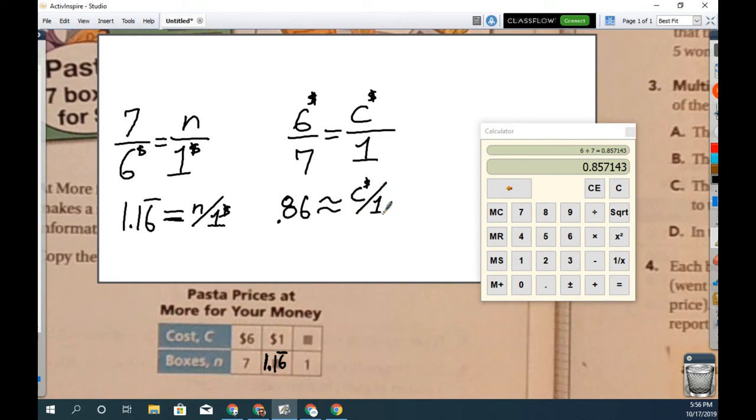0.86 approximately, and that gives me my cost in dollars per one box. All right, so then that tells me that if I have one box I know the cost of that box, and the cost of that box is approximately 0.86 cents. And now things start to make sense. So if I'm buying boxes and they're a little bit less than a dollar a piece and I buy seven of them, I should pay a little bit less than seven dollars. Here for a single dollar I get a little bit more than one box.